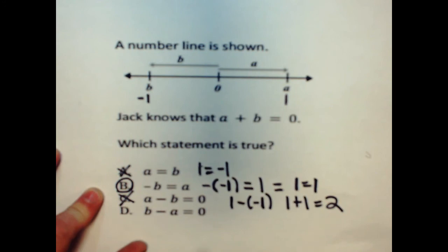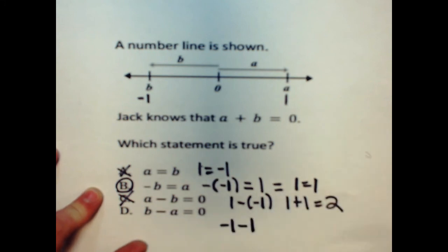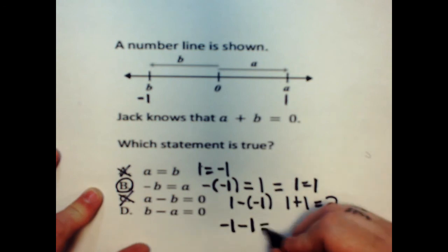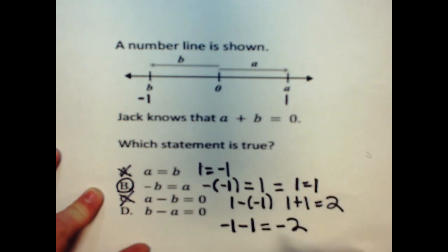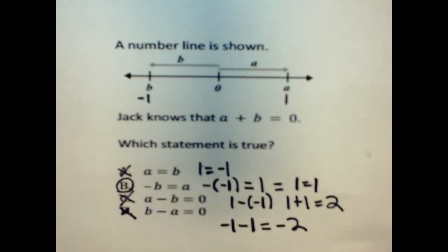And then the very last one, I have a negative one. I can put a negative one in for B and subtract another one. And I know if I'm at negative one and go another one in the negative direction, that's going to give me negative two. So, that doesn't equal zero either. So, I know the only one that's true in this would be B.